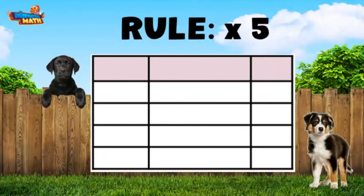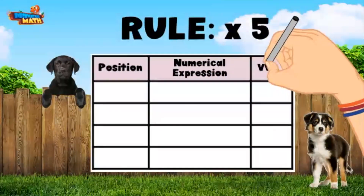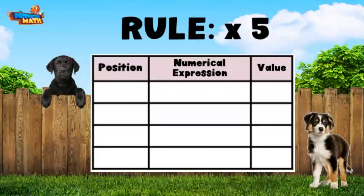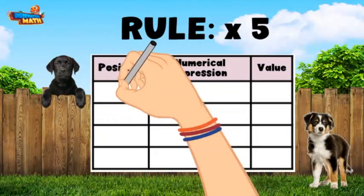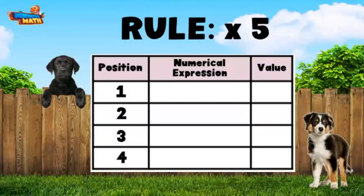On our table we have three columns. We are going to label them position, numerical expression, and value. Position just means the position of the number in the pattern. We can start with one, two, three, and four. Numerical expression is where we will apply our rule of times five, and value is the number we get after applying our rule.